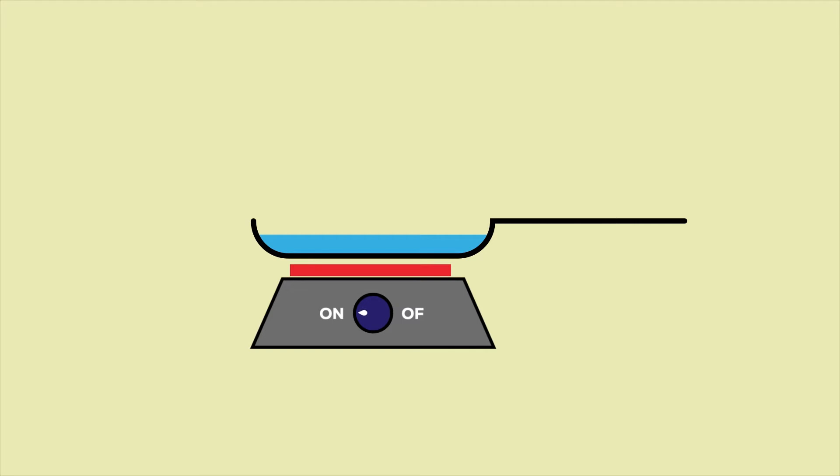In our everyday life, it has been observed that when a pan full of water is boiled on a flame, its temperature increases. But when the flame is turned off, it slowly cools down. But why?